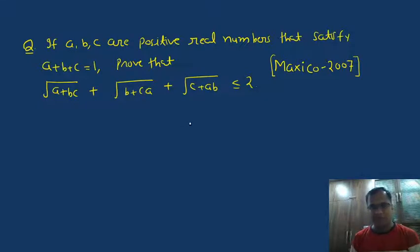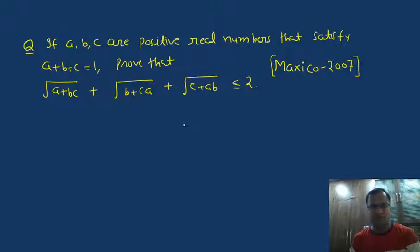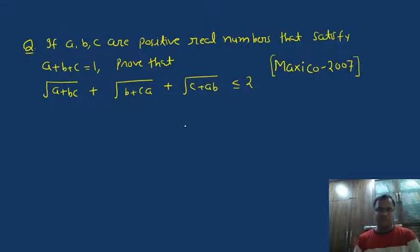Hello everyone! In this lecture, I am going to solve the 2007 Mexico Olympiad problem. In this problem, we are given 3 positive real numbers whose sum is 1, and we have to prove this inequality.